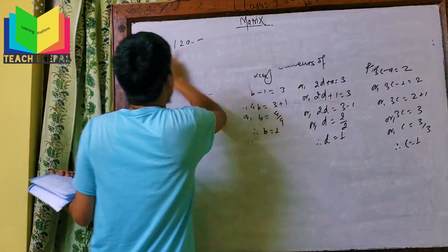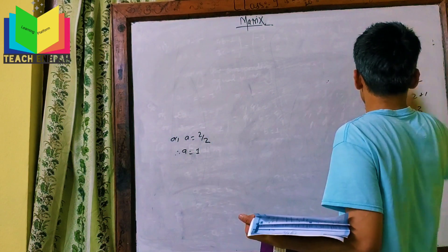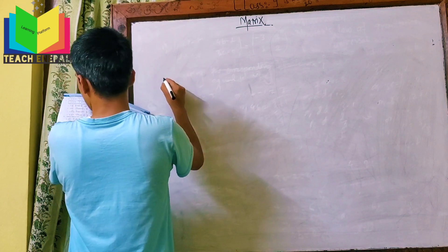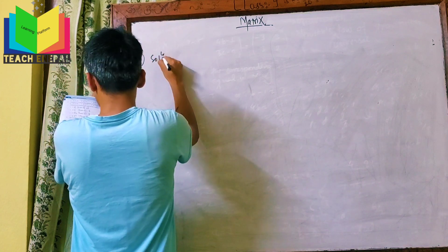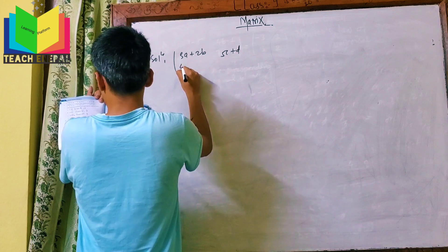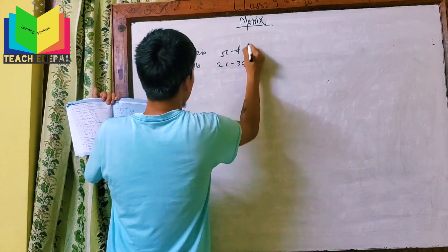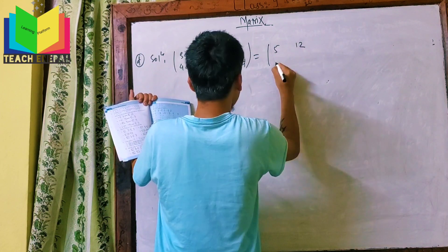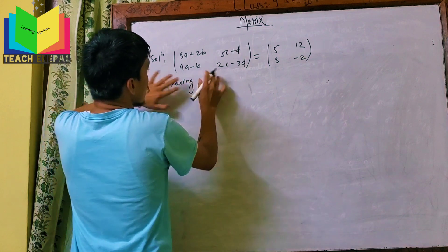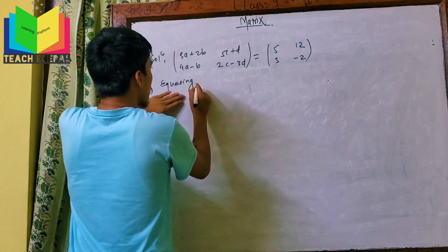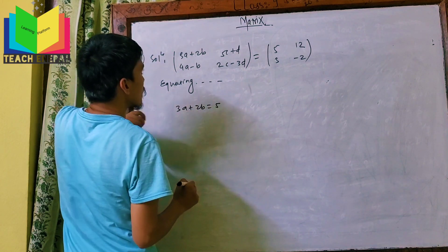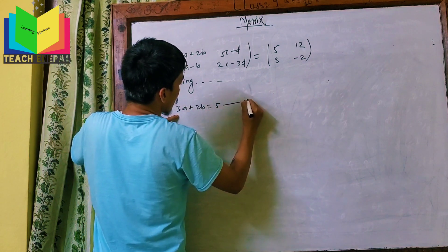Now for the last question: the matrix equation is 4a+2b, 5c+d, 4a-b, 2c-3d equals 5, 2b, 3, minus 2. Equating corresponding elements of the equal matrices, we get equation 1: 3a+2b equals 5.